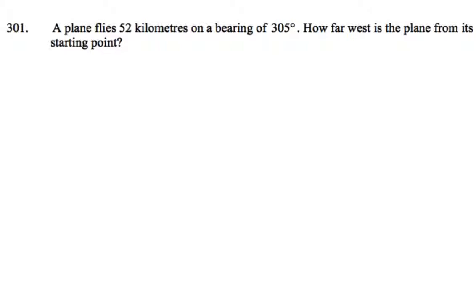Here's the diagram. A plane flies 52 kilometres on a bearing of 305 degrees. How far west is the plane from its starting point? We'll try and get a right angle triangle happening here. But I'm just going a little slower here so you can pause the video briefly and try and maybe get that diagram done. But if you're not going to do that, I'll press on.